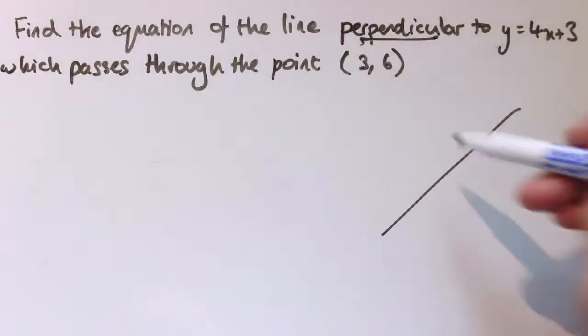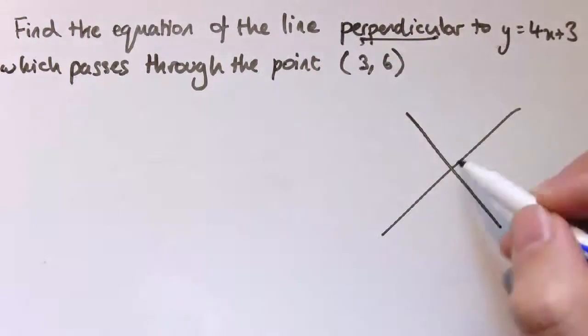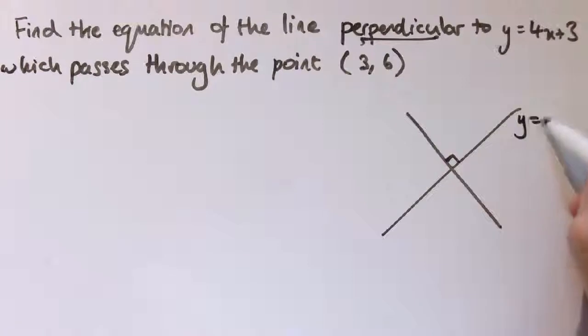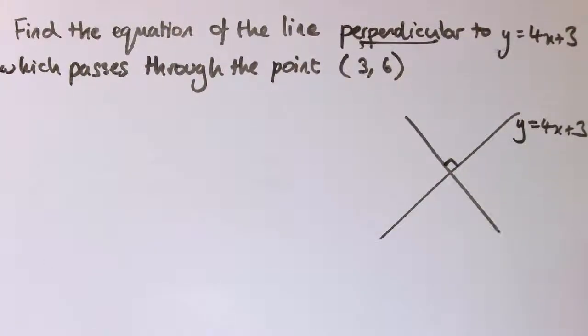Now a perpendicular line, that's a line that's at right angles to the original line. So if this was y equals 4x plus 3, this one here has m equals 4 for the gradient. For this one, the perpendicular one, we need to take the negative reciprocal.